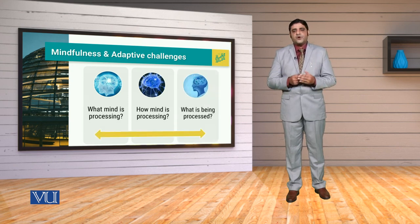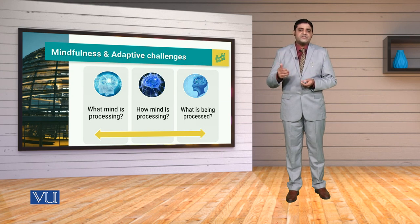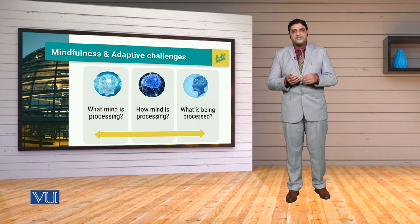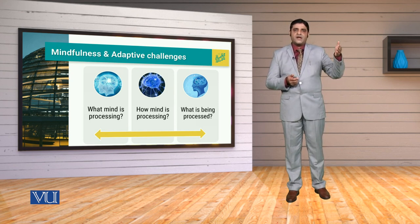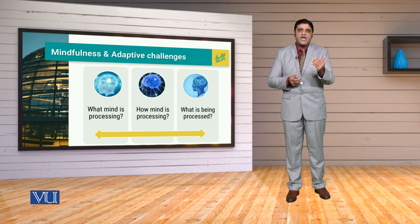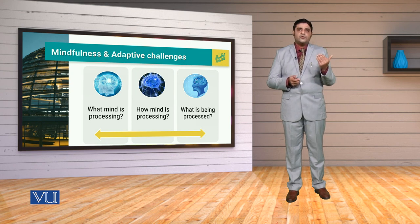The third important thing is what is being processed. We have to know that eventually, this variable construct phenomena that we have understood — our perception has developed — and that is what is being processed. We have to know about the mind activity.